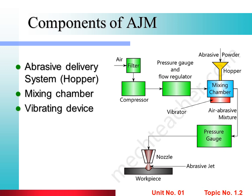The third component is the Vibrating Device, mounted at the bottom of the mixing chamber. Its function is to avoid the sticking of abrasive material at the bottom of the mixing chamber — it prevents particles from sticking there. The fourth component is the Nozzle, generally made of tungsten carbide material. Abrasive particles enter the nozzle, which increases their velocity and pressure, and they then strike on the workpiece. After striking, the workpiece fractures and material is removed.